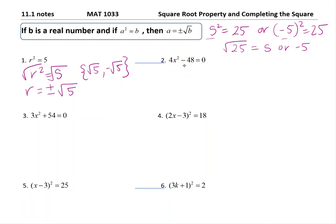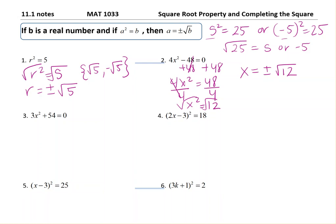For this problem, I'm going to add 48 to both sides to get 4x squared equals 48. Divide by 4, I get x squared equals 12. Now I take the square root of both sides and get x equals plus or minus square root of 12. We need to simplify: 12 can be written as square root of 4 times square root of 3. Square root of 4 simplifies, giving x equals plus or minus 2 radical 3.